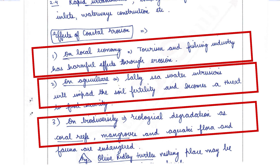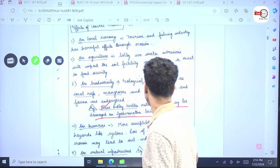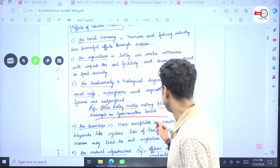On biodiversity. Ecological degradation as coral reefs, mangroves, aquatic flora and fauna could be endangered. For example, olive ridley turtle nesting place may get damaged on Gahir Mata beach in Odisha.